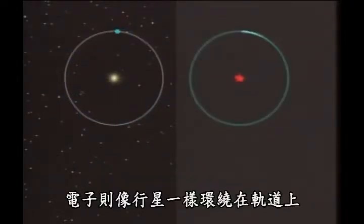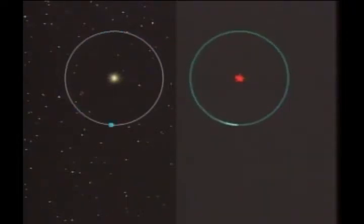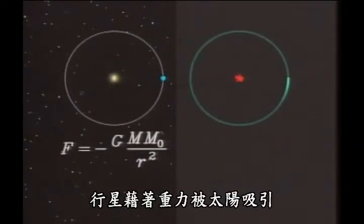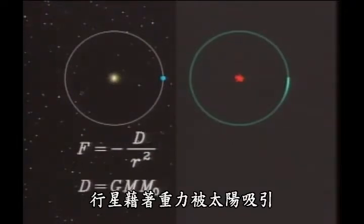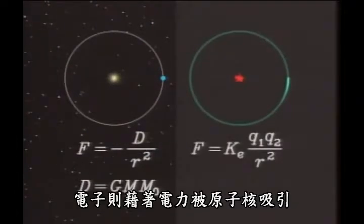And like a planet, an electron was set into orbit around it. But while a planet is attracted to the sun by the force of gravity, the electron is attracted to the nucleus by the force of electricity.